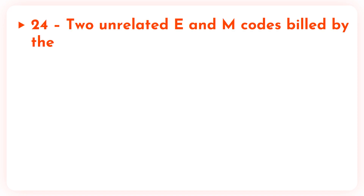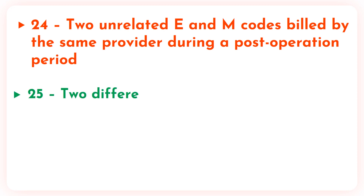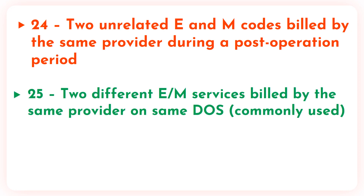Modifier 24 is used when two unrelated E&M codes are billed by the same provider during the post-operation period. Modifier 25 is used when two different E&M services are billed by the same provider on the same date of service. It is a commonly used modifier.